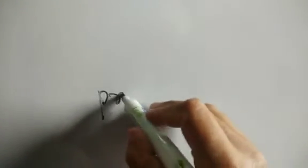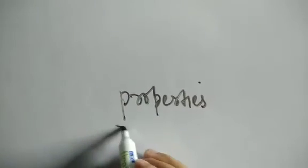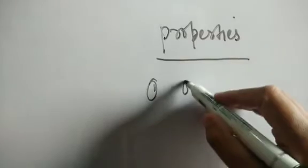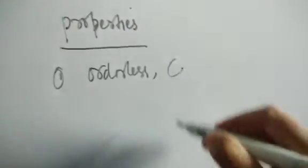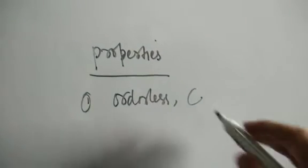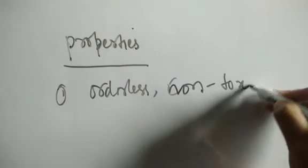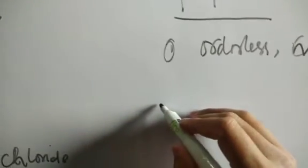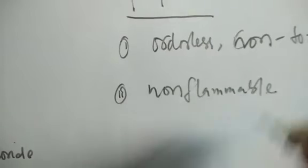After types of addition, another important point is: what properties should a substance have so that it can act as a plasticizer? Number one, it should be odorless. It should be non-toxic. It should be non-flammable. And it should be stable — obviously it should be stable to heat.